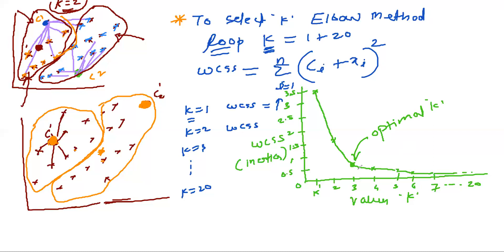So wherever you find the bend or knee in the graph, that particular value of k is considered the optimal value. From that point onward, the decrease in WCSS becomes very small. That's the elbow method, which is used to select the value of k in k-means algorithm. In the next video, I will talk about the implementation of k-means and the elbow method. Thank you very much.